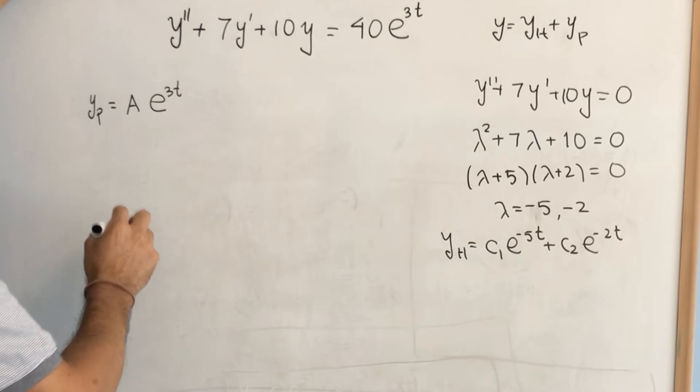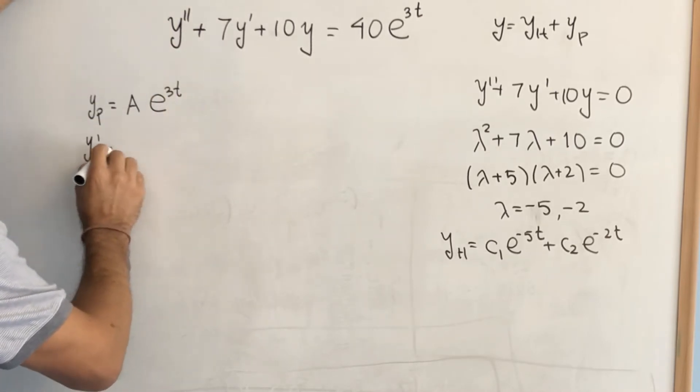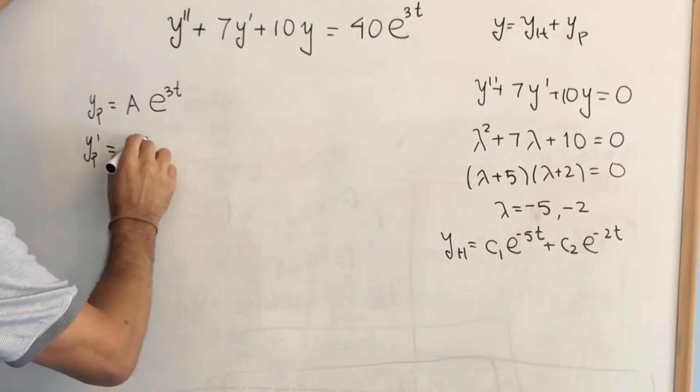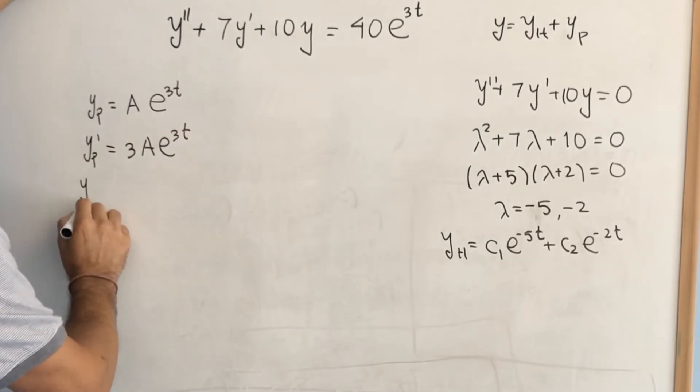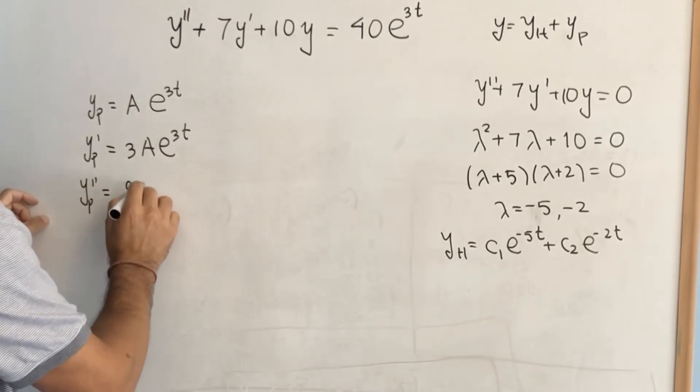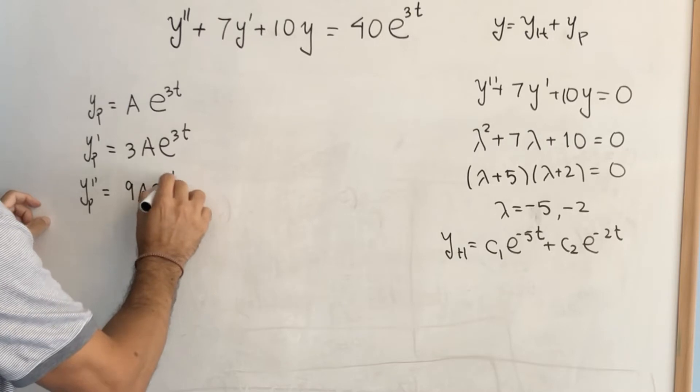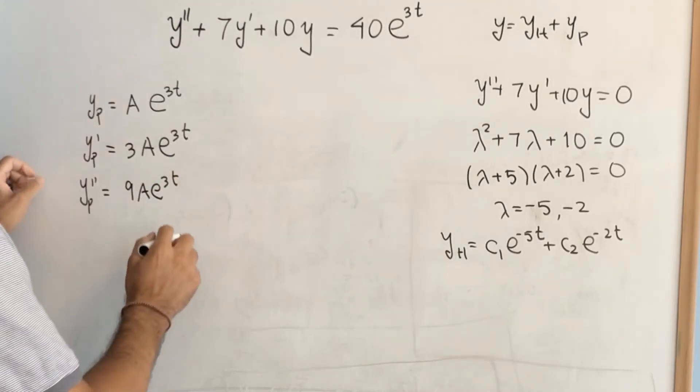And then, we need to do what the differential equation tells us to do. We have to compute a derivative, which is 3a e to the 3t. We compute a second derivative, which is 9a e to the 3t. And we replace in the original differential equation.